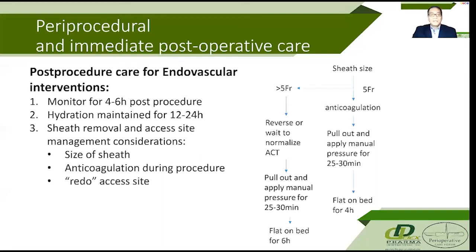To achieve an adequate and safe seal of the arterial entry site, one must consider the size of the access sheath and whether anticoagulation was used during the procedure. If the procedure is a basic arteriogram performed through a 5-French sheath and no anticoagulant is used, the sheath can be pulled out at the end of the case and manual pressure held for 20 to 25 minutes to achieve a safe arterial seal.